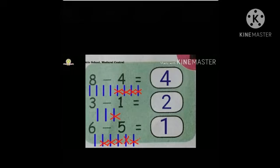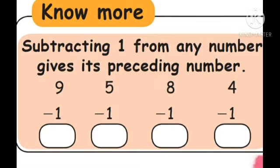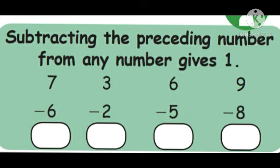Subtracting one from any number gives its preceding number. Nine minus one — answer is eight. Five minus one — answer is four. Eight minus one — answer is seven. Four minus one — answer is three. Subtracting a preceding number from any number gives one: seven minus six equals one, three minus two equals one, six minus five equals one, nine minus eight equals one. This is the answer for page number nine.